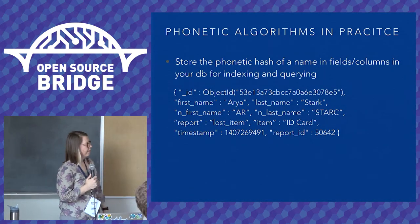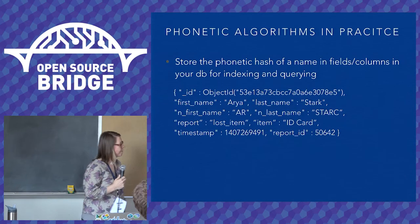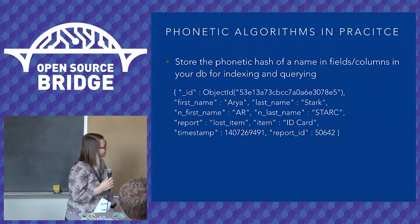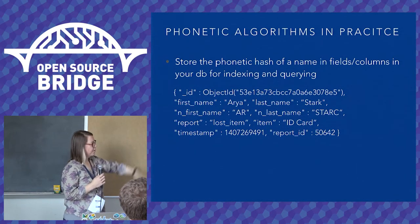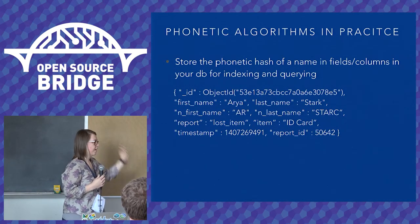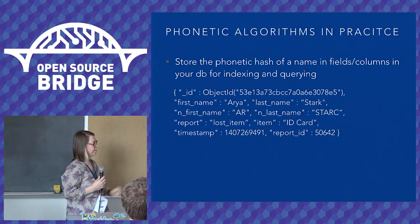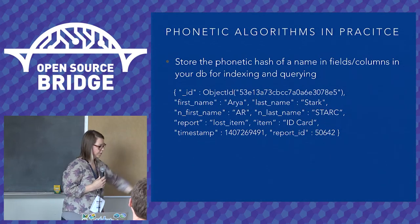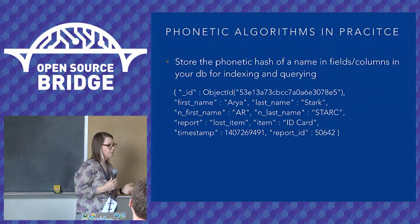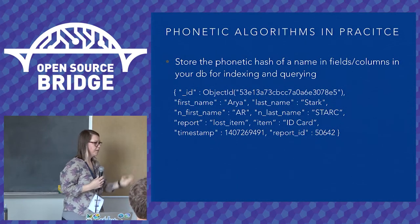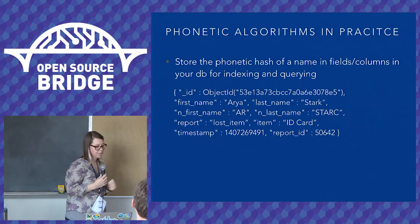Here's an example of how I used this: I was using MongoDB for my lost and found item database. In this case, Arya Stark has lost her ID card. I'm storing her first name, her last name, and then the phonetic representations of them. When I implemented the search, I had it do a translation at runtime — whatever they're typing in, run a phonetic algorithm on it, and then look in the database to find a match. That way I could do fuzzy or partial matching on the phoneme, or do an exact match if I want something more specific.